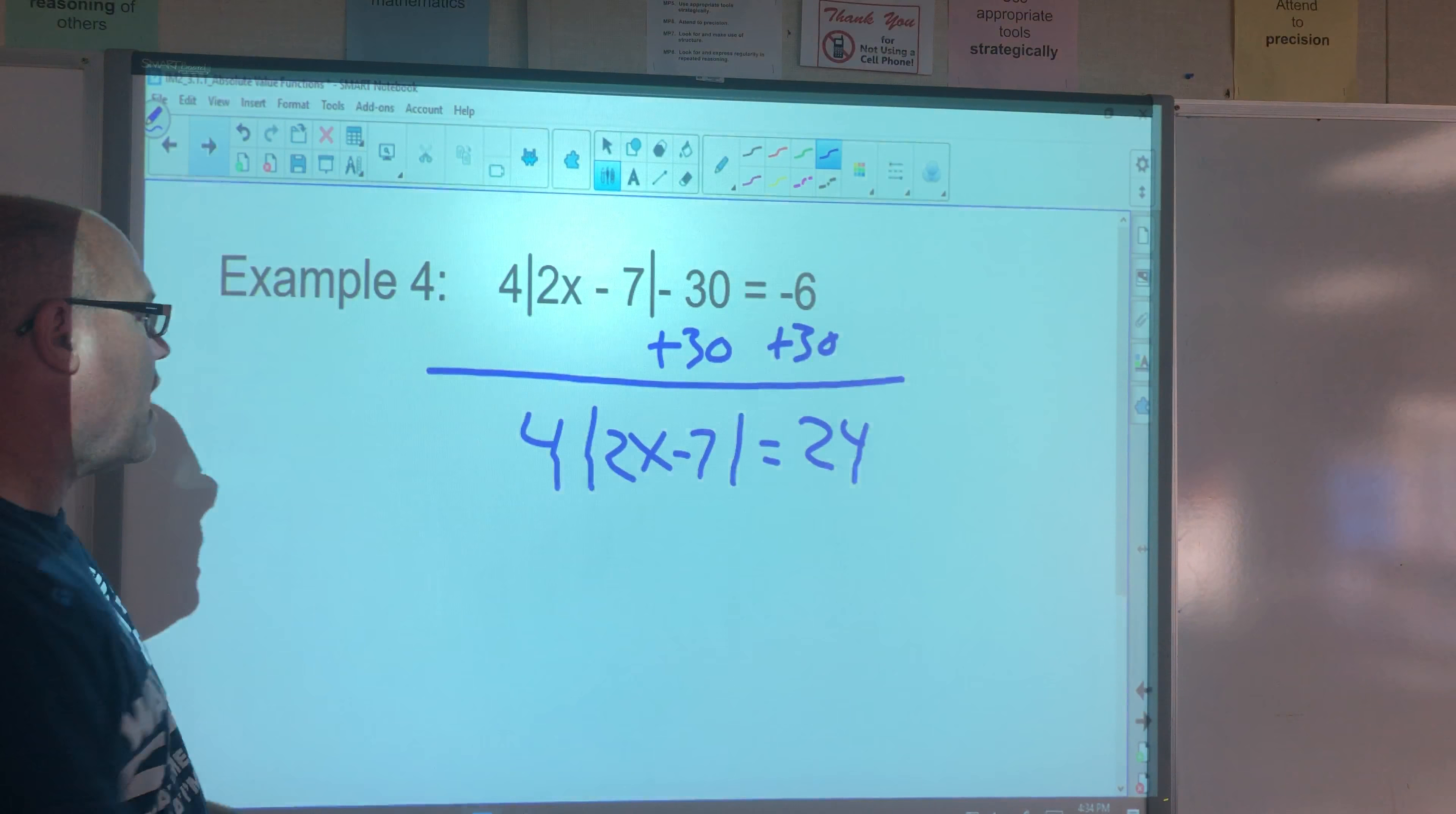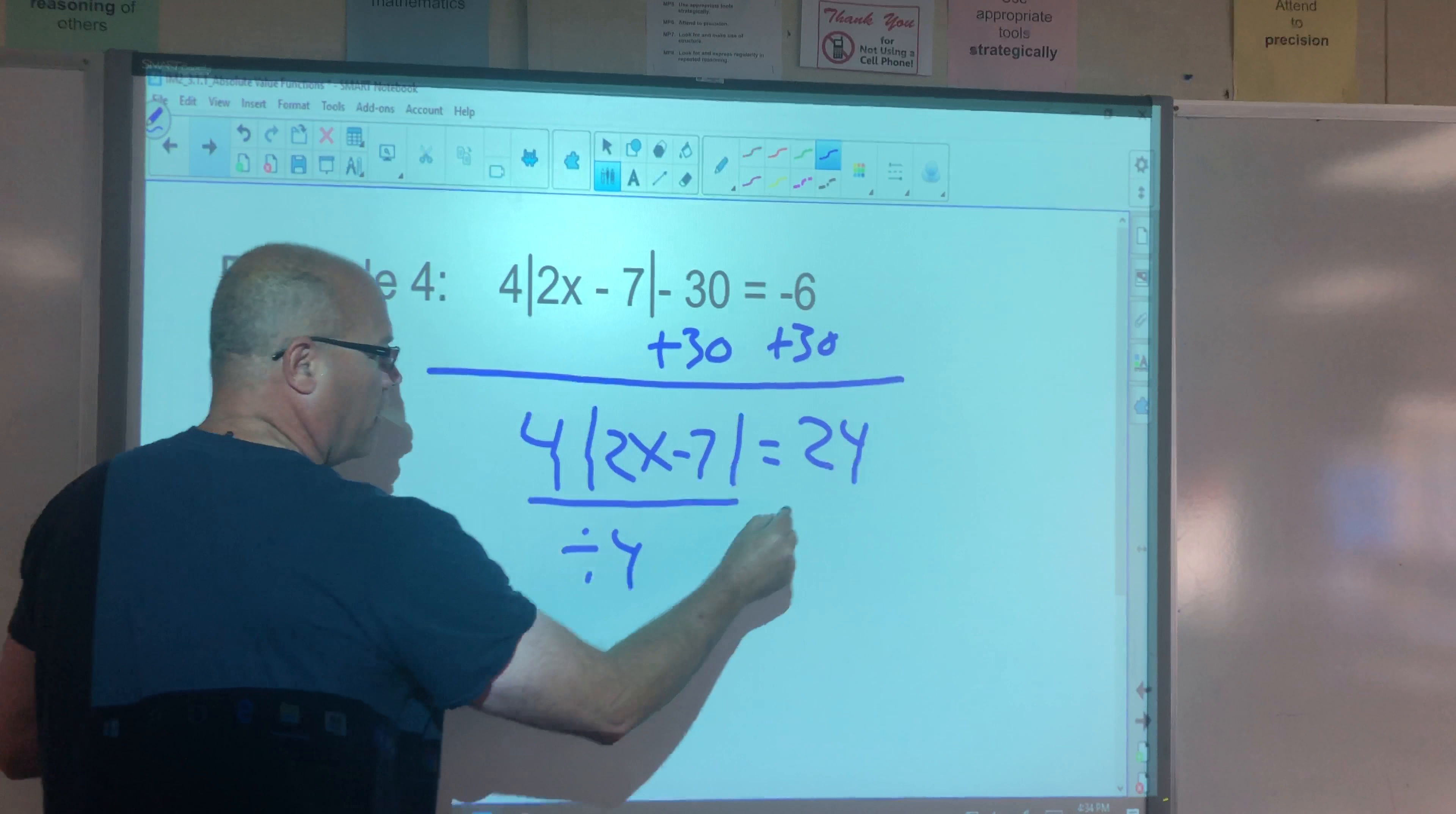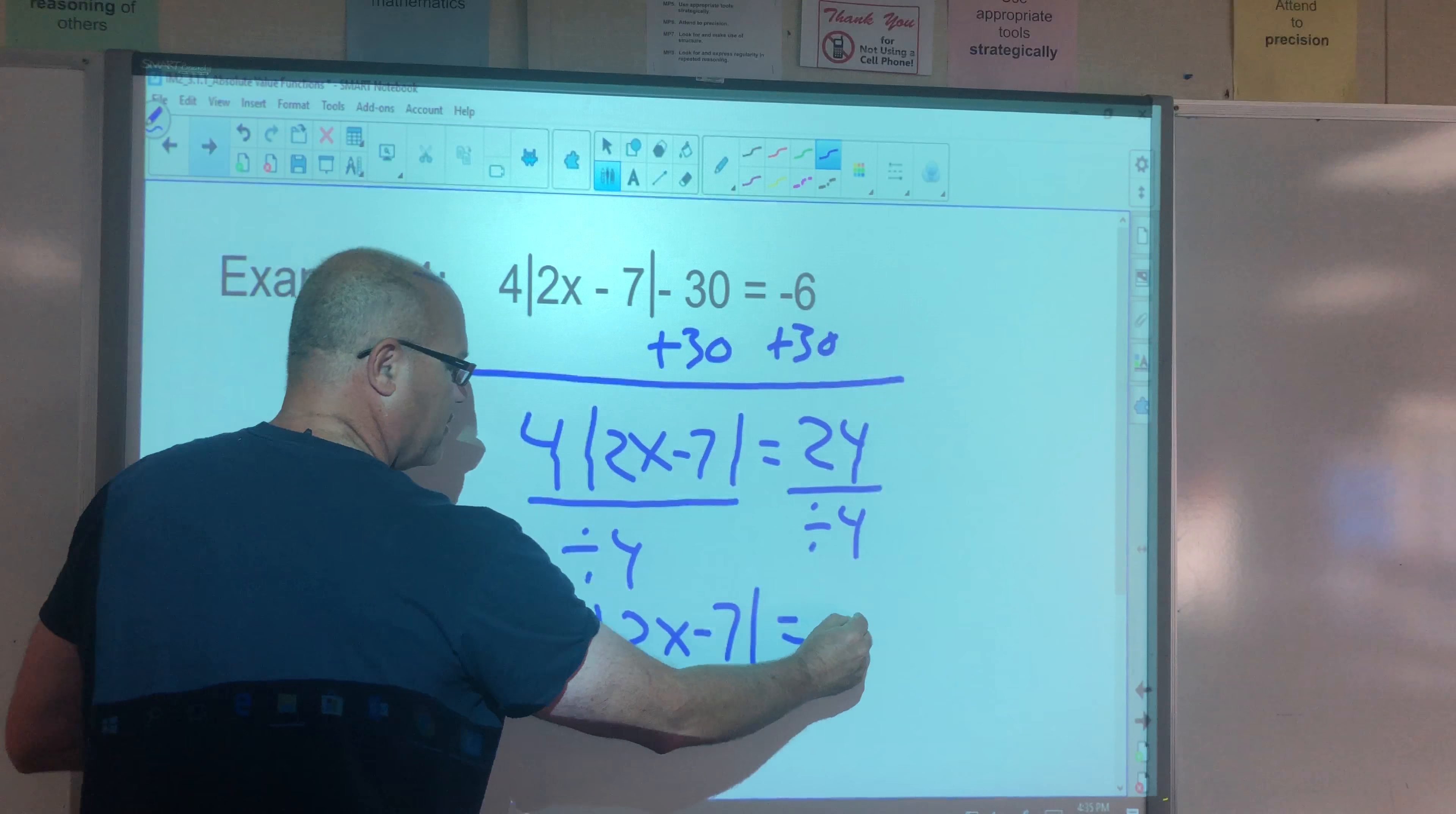Do not do not do distributor property here. How do we undo multiplication? That's right. We're going to divide. So we're going to divide by four, divide by four, and we get the absolute value of 2x minus 7 equals 6.